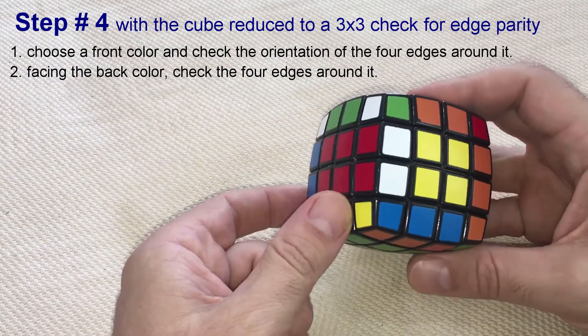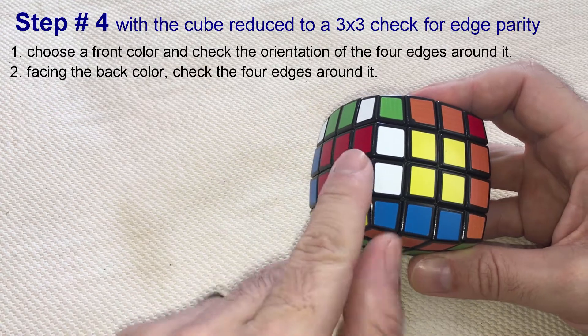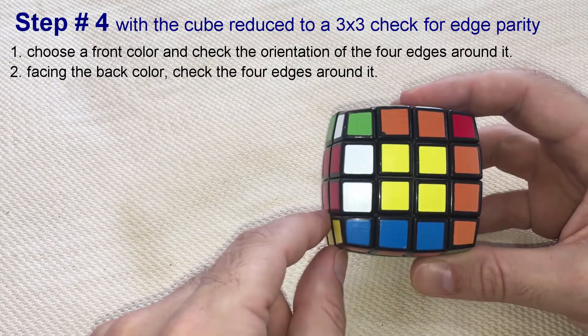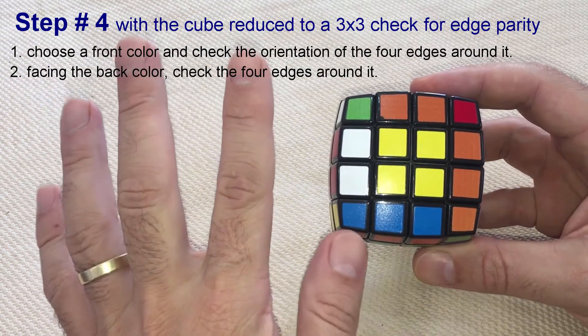Now, note that this red is also correct, but this counts only as one good edge. So, we have counted five good edges so far.